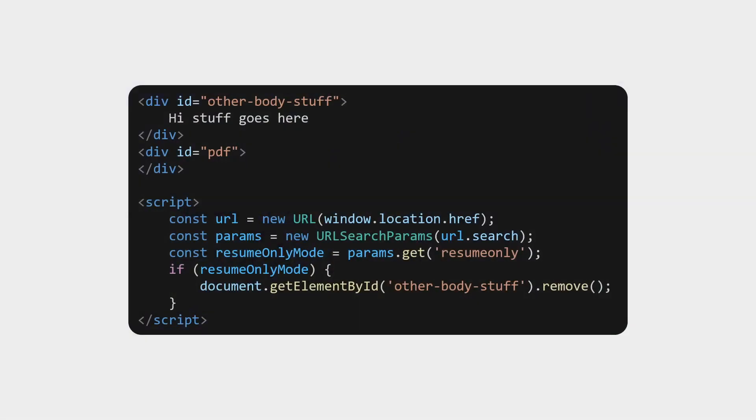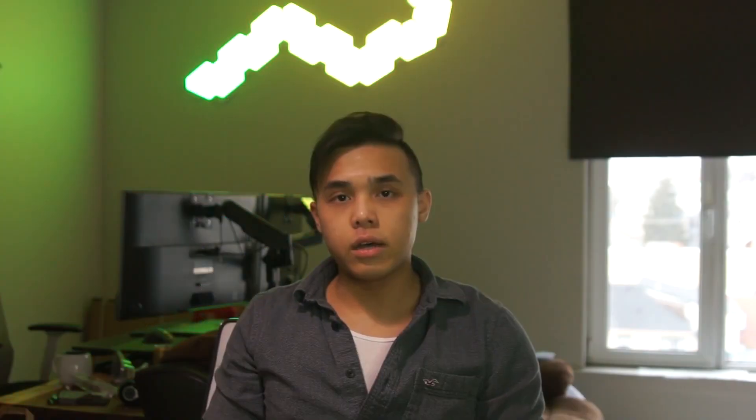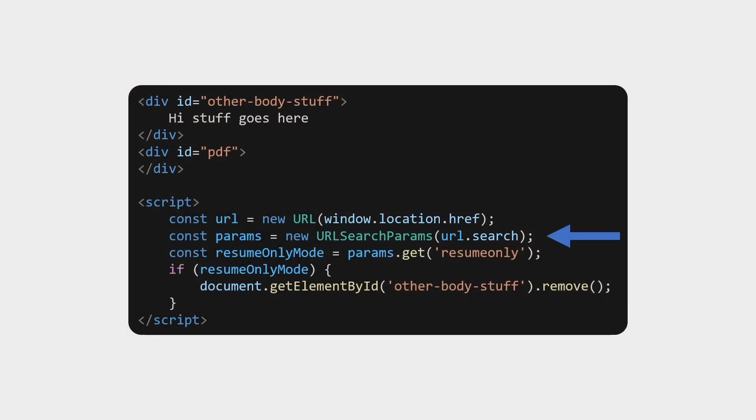The point isn't just to make it in HTML — we want to put it on our website with other content around the resume. My solution was to have a query parameter that enables a resume-only mode to be used during Puppeteer's export step. For this we create a new URL based on the window location, grab the query parameters using the URLSearchParams class — note this does not work with Internet Explorer 11 — and then remove elements based on that query parameter.